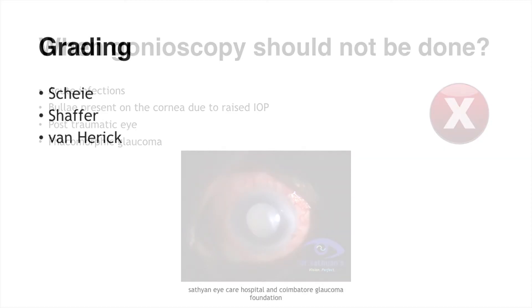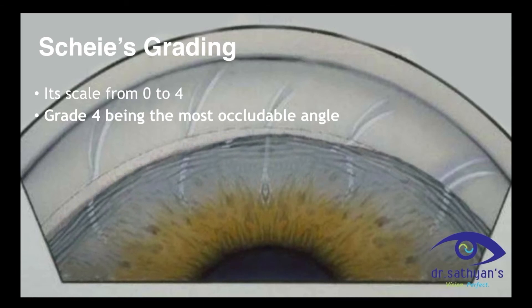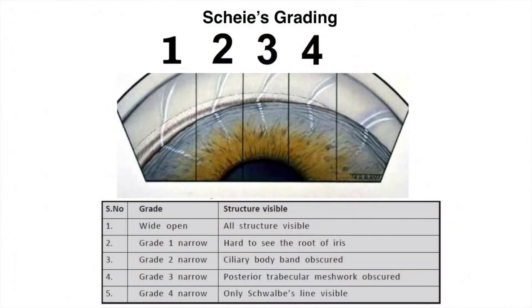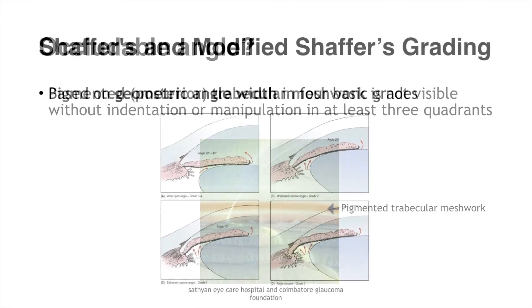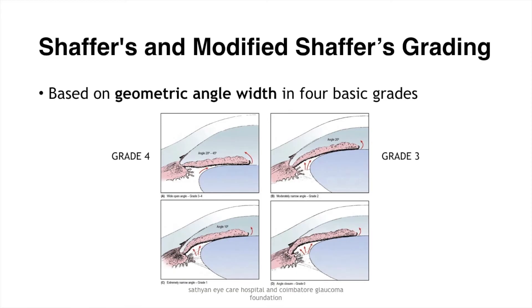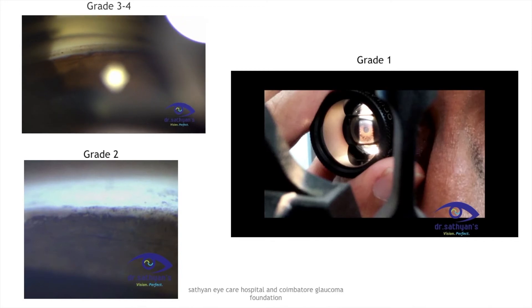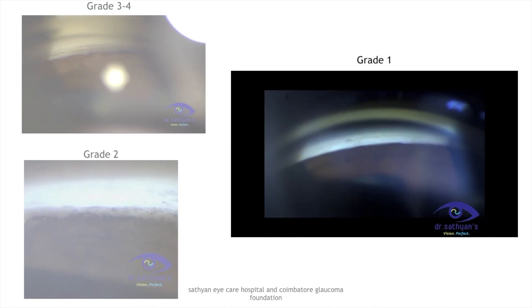Moving on to how to grade an angle. In Scheie's grading, it ranges from 0 to 4, where grade 1 is wide open and grade 4 is the most occluded. An occludable angle is one in which the pigmented trabecular meshwork is not visible in at least three quadrants. Shaffer's grading system is based on geometrical angle width and is an exact reversal of Scheie's grading. In grade 3 and 4, almost all angle structures are visible with a geometric width of 20 to 40 degrees. In grade 2, only the trabecular meshwork is visible with a width of 20 degrees. In grade 1, only the Schwalbe's line is visible, which is less than 10 degrees.